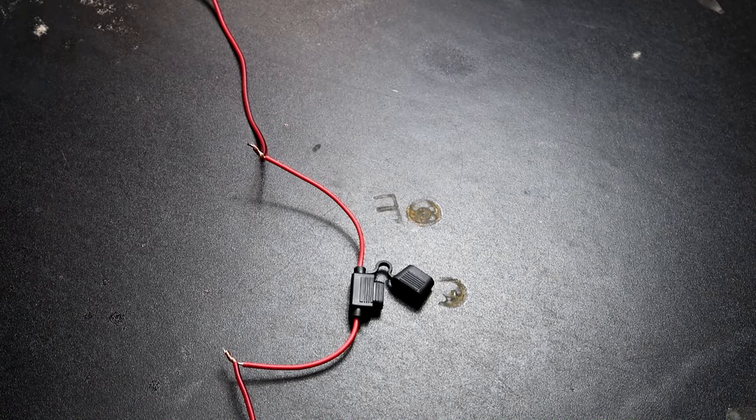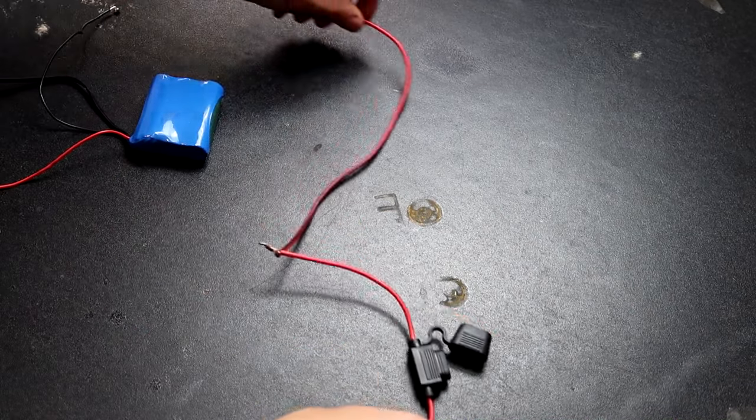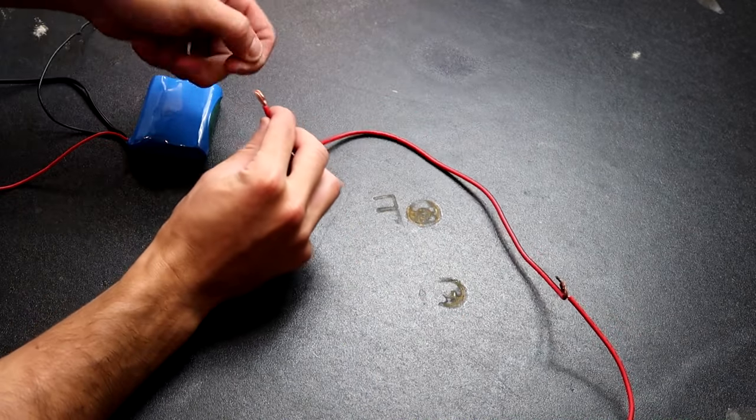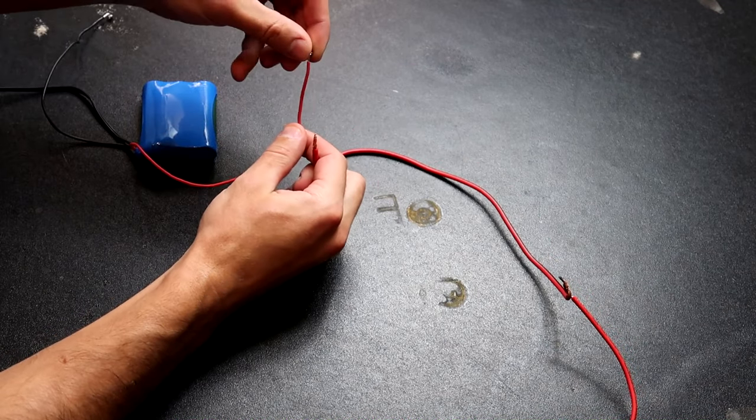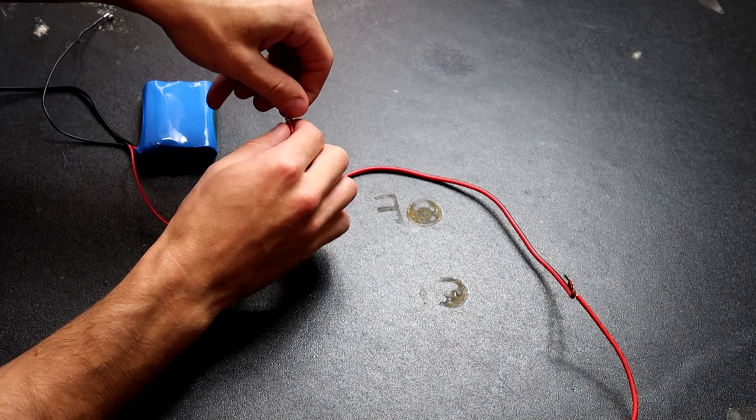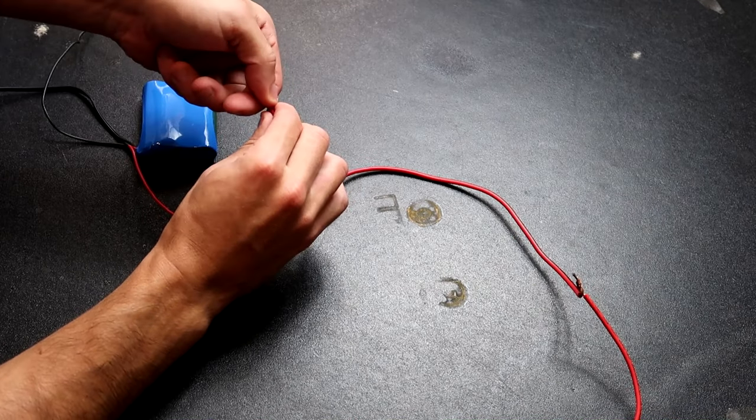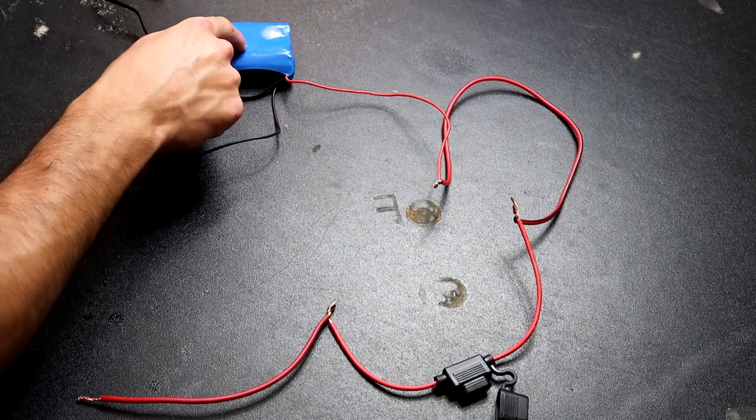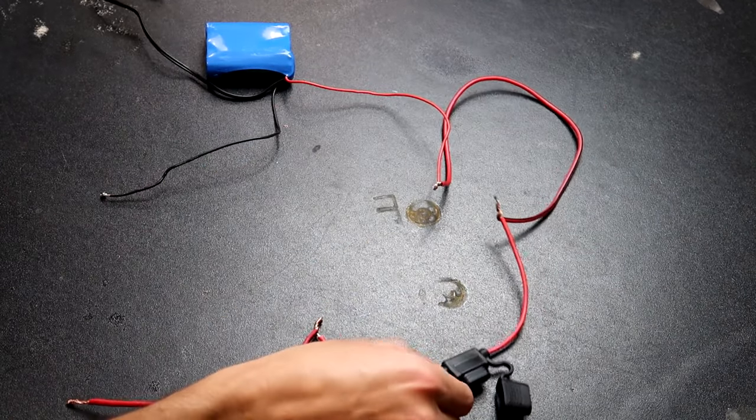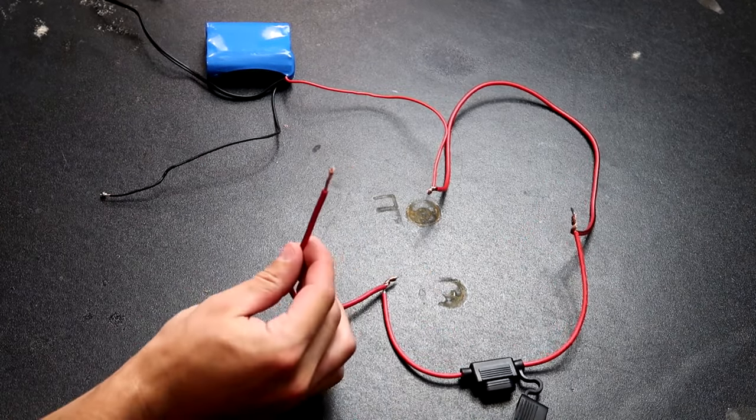Get our 12 volt battery here and attach one of the sides to the positive of the battery. Just like that. All right, so we got our battery positive going through the wire, through the fuse, coming out right here.